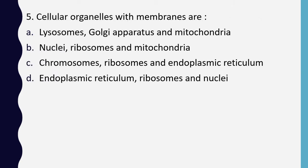Question 5. Cell organelles with membranes are: lysosome, Golgi apparatus and mitochondria; nuclei, ribosomes and mitochondria; chromosome, ribosomes and endoplasmic reticulum; or endoplasmic reticulum, ribosomes and nuclei. Correct answer is option A: lysosome, Golgi apparatus and mitochondria.